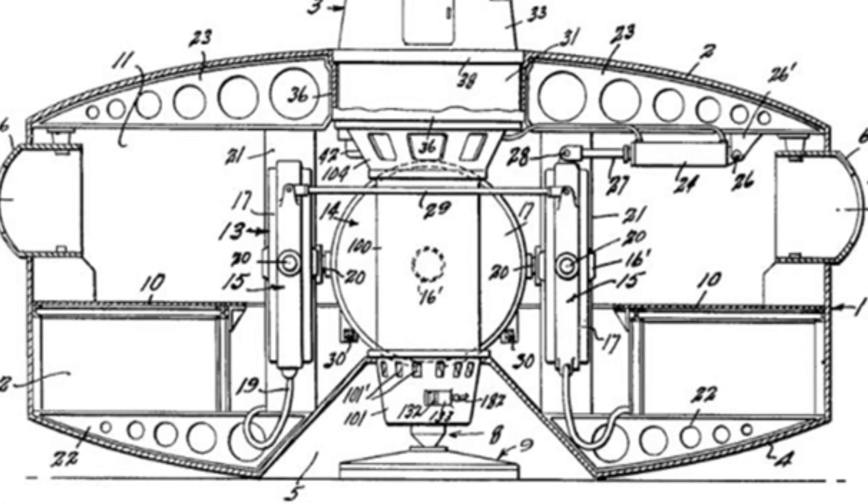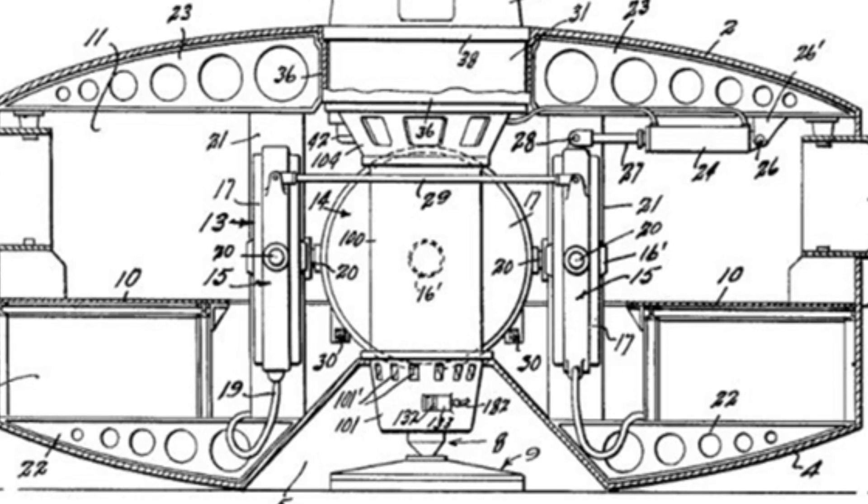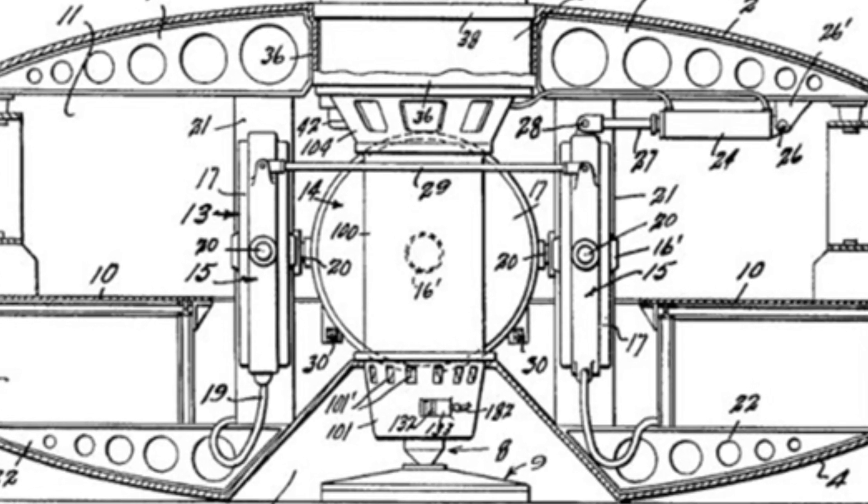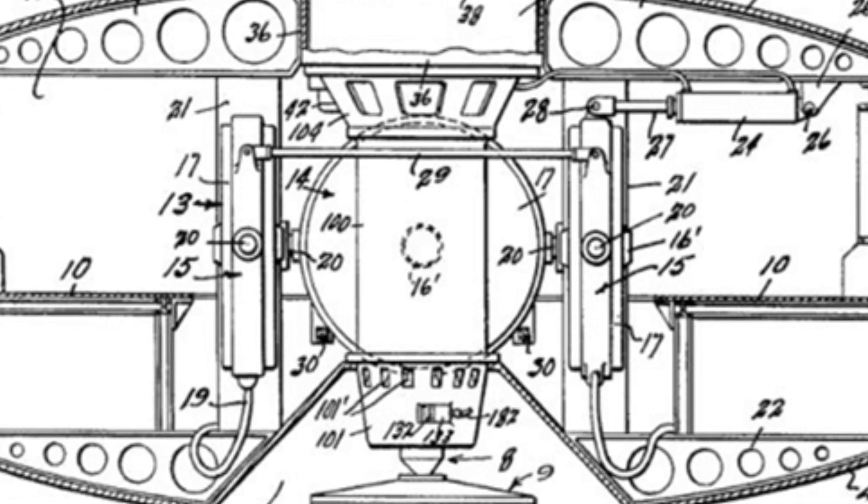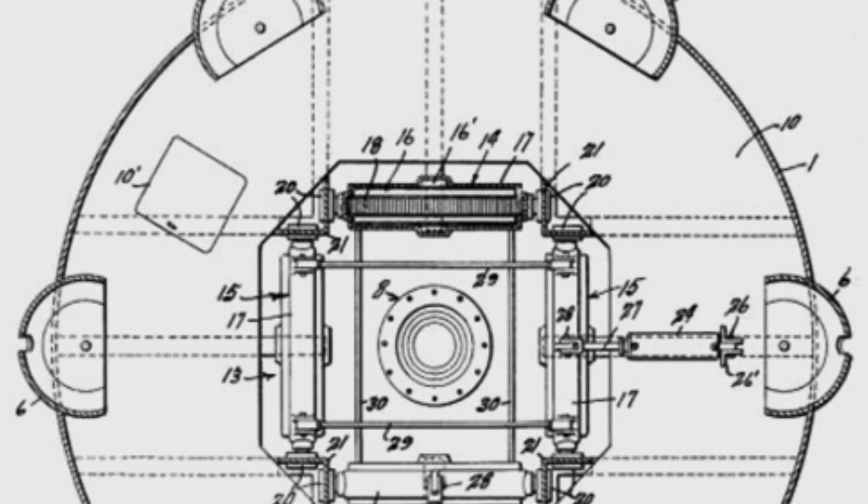Six semi-buried turrets are evenly distributed around the hull, each turret having a 90 degrees firing angle in its respective direction, forming a 360 degrees coverage of firepower. The weapons can be cannons and machine guns.